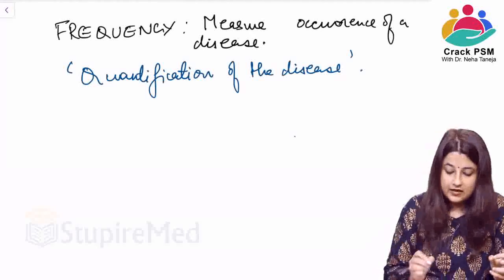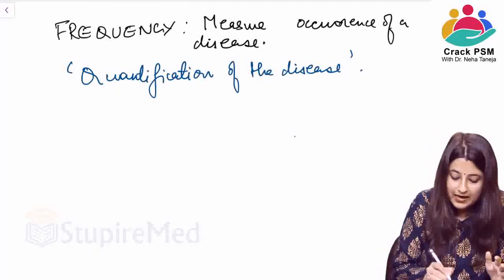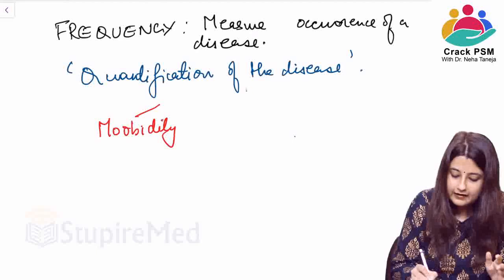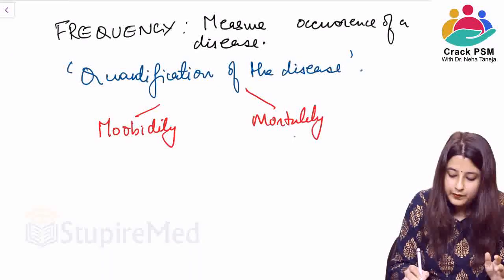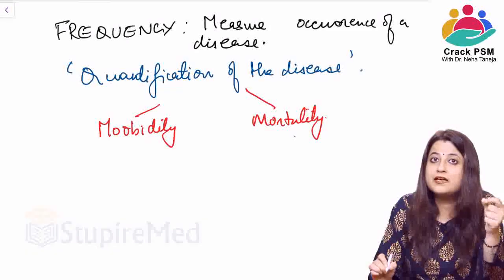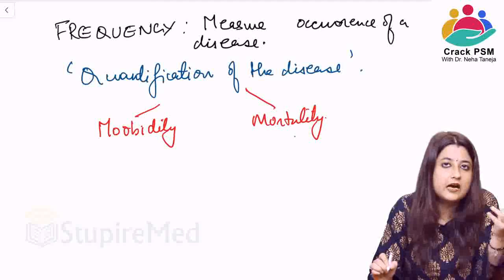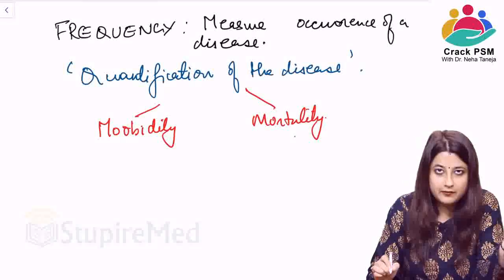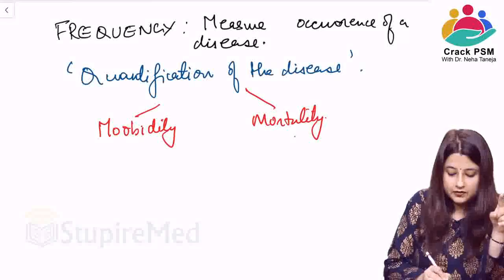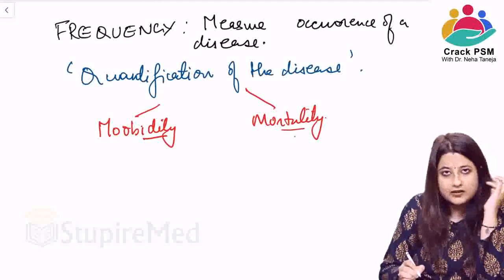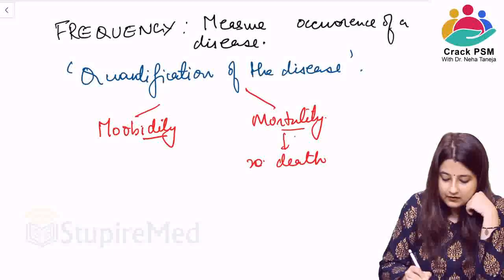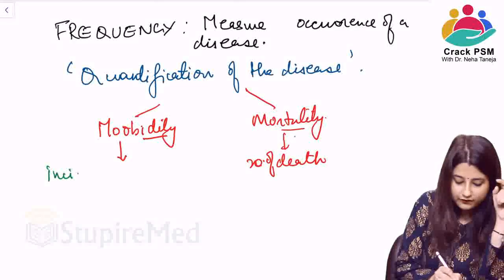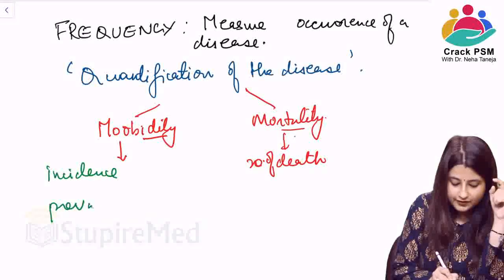How will you quantify the disease? You will be able to quantify it by using measures of morbidity and mortality. Mortality is measured by the number of deaths occurring. For morbidity, it is measured by two important determinants: incidence of a disease and prevalence of a disease.